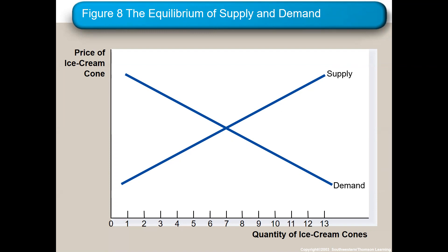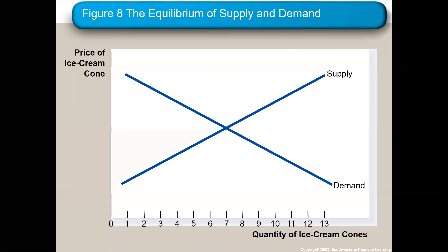Complements are two goods where if the price of one goes up, the demand of the other goes down. So complements: price of one goes up, demand of the other goes down.